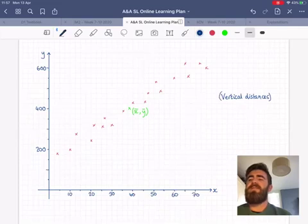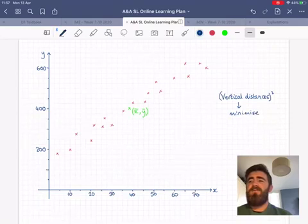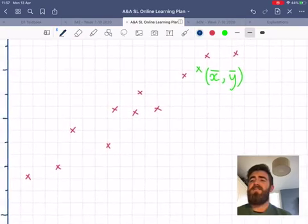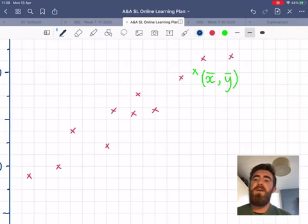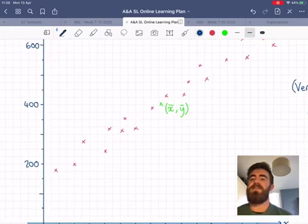And because some of those will be negative, we're going to square that. And then, based on all potential lines, we're going to find the one that has the minimum sum of those vertical distances squared.